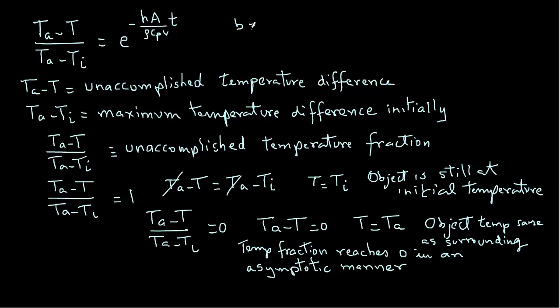The B value tells us something about how rapidly or slowly the object is going to heat, because the B value is influenced by the thermal properties, the size, as well as the convective conditions surrounding the object.